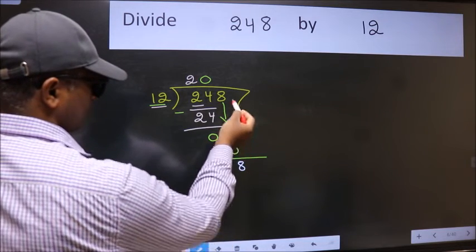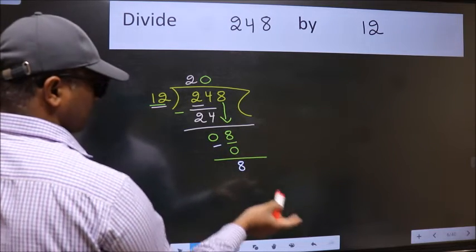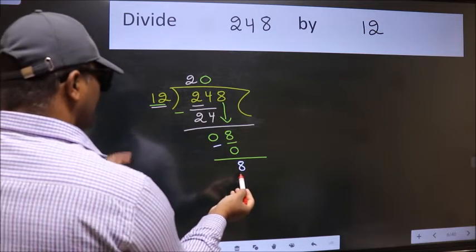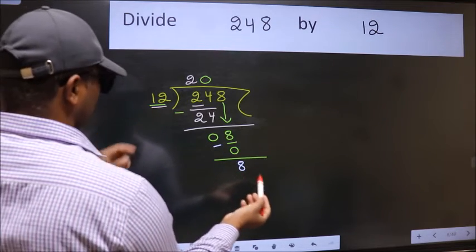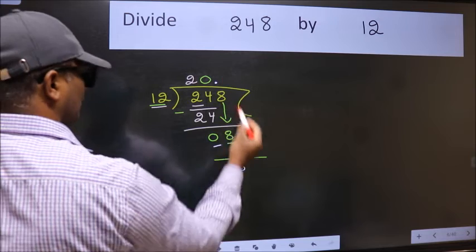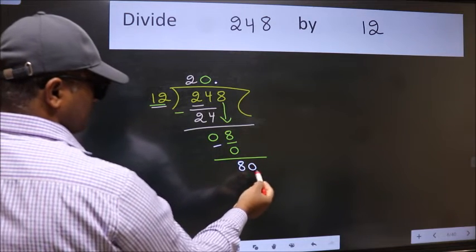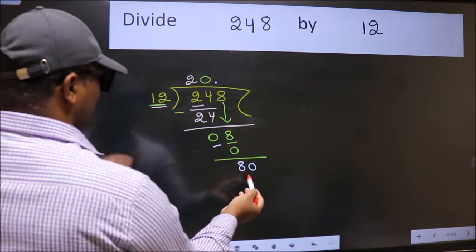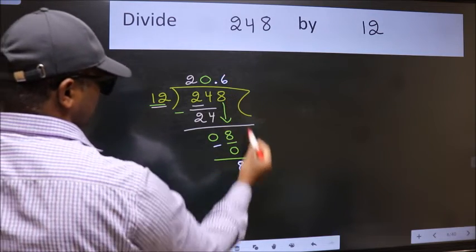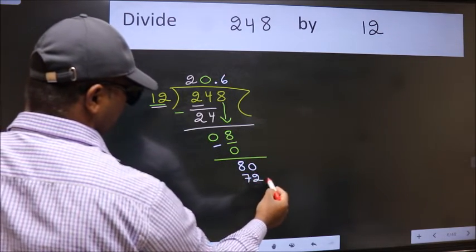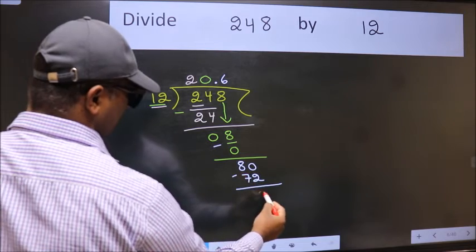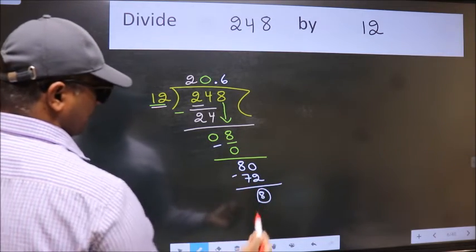Over here we did not bring any number down. And 8 smaller than 12. So now we can put dot and take 0. So 80. A number close to 80 in 12 table is 12672. Now we subtract. We got 8 again.